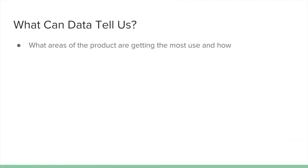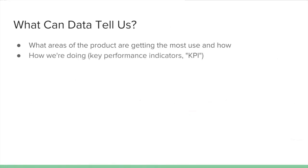So with that being said, what can data tell us? Data can tell you what areas of the product are getting the most use and how. People vote with their clicks — if they're looking at a certain page more than others, chances are it's a useful and valuable page. Data can tell you how you're doing against key performance indicators, and that's what we'll be talking about for most of this presentation. It can also tell you the outcome of an experiment if you can truly isolate two environments and test them scientifically.